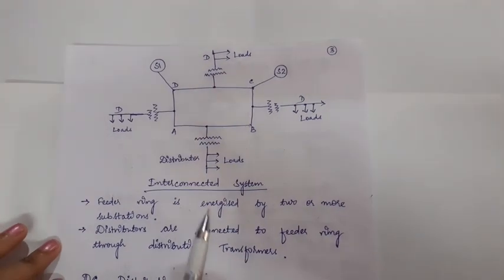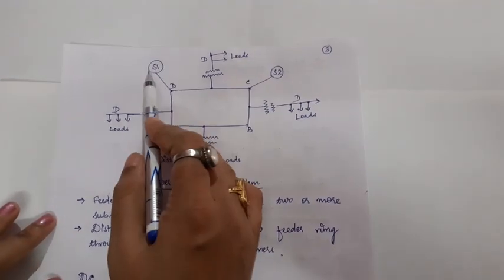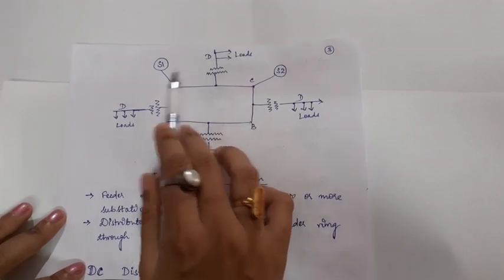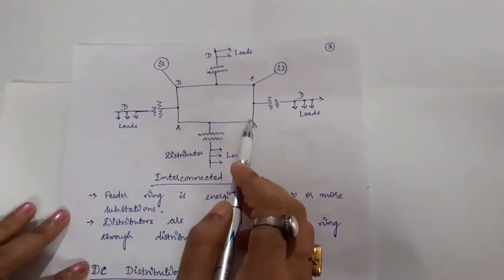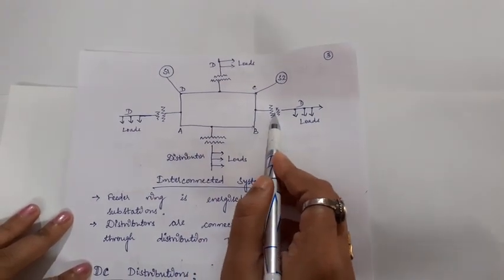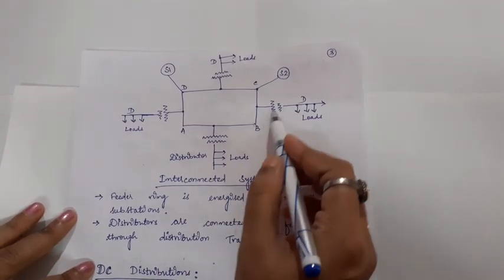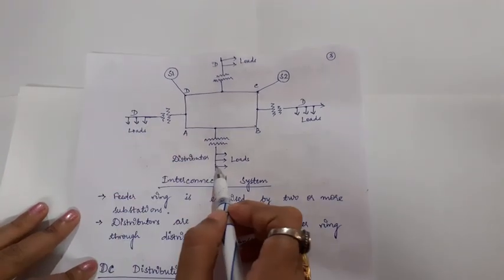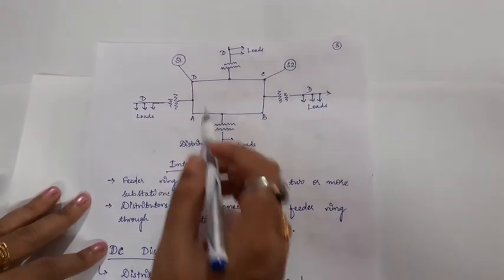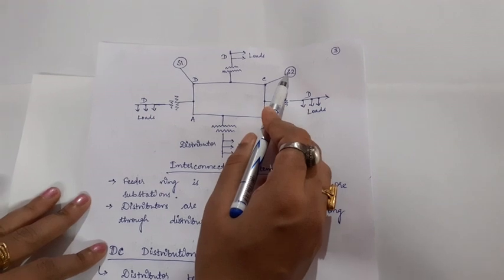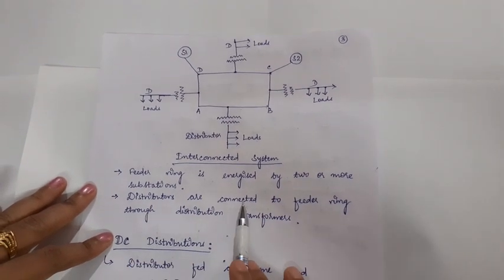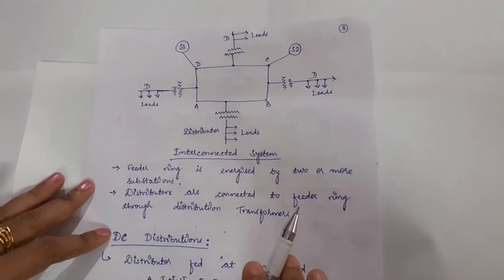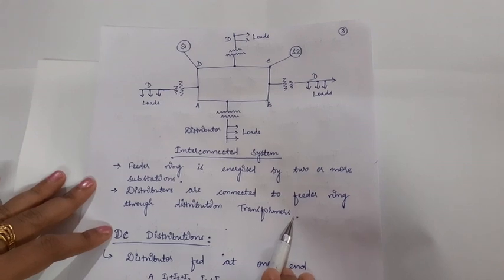In the interconnected system, the feeder ring is energized by one or more than two substations. Here S1 and S2 are the two substations which form a feeder ring. From the feeder ring, the distribution transformers are connected. On the secondary side of the distribution transformers, the distributor lines are there. From the distributors, tappings are taken to the service mains and finally to the consumer loads. More than two generating stations or substations are connected, and the distributors are connected to the feeder ring through the distribution transformers.